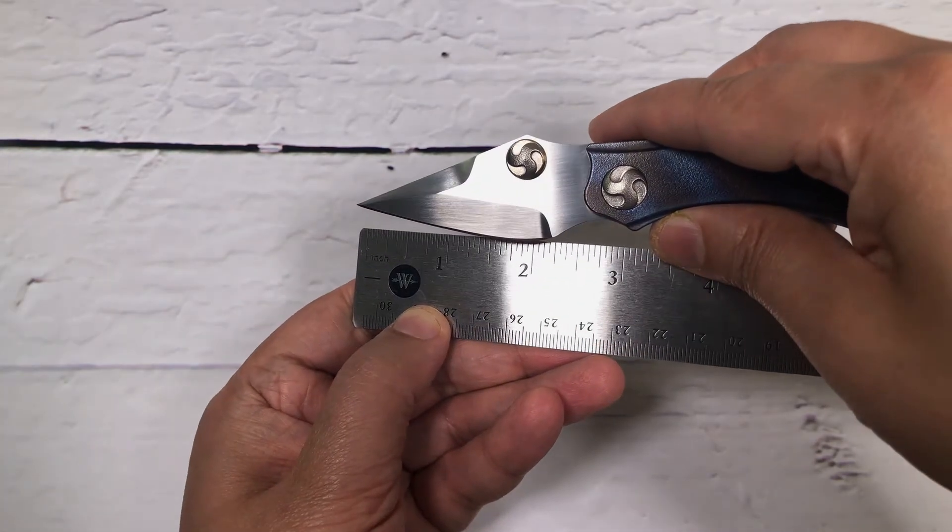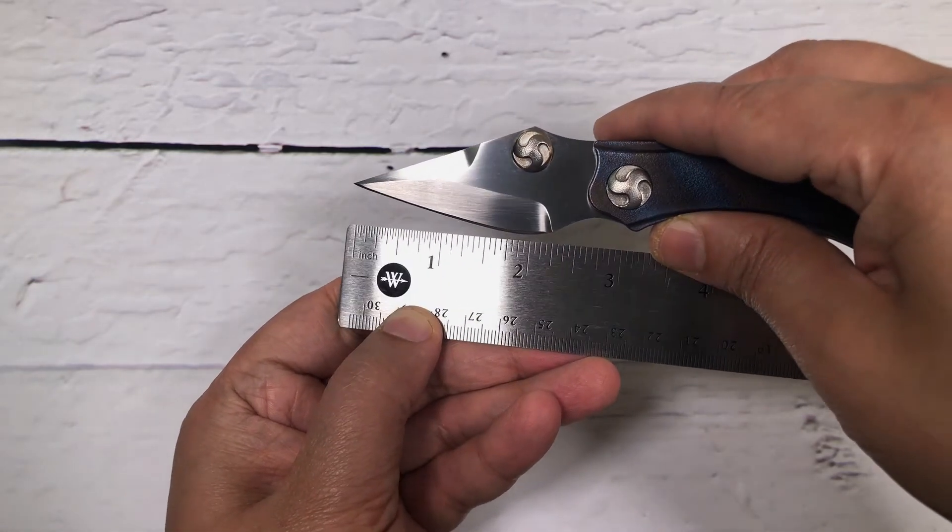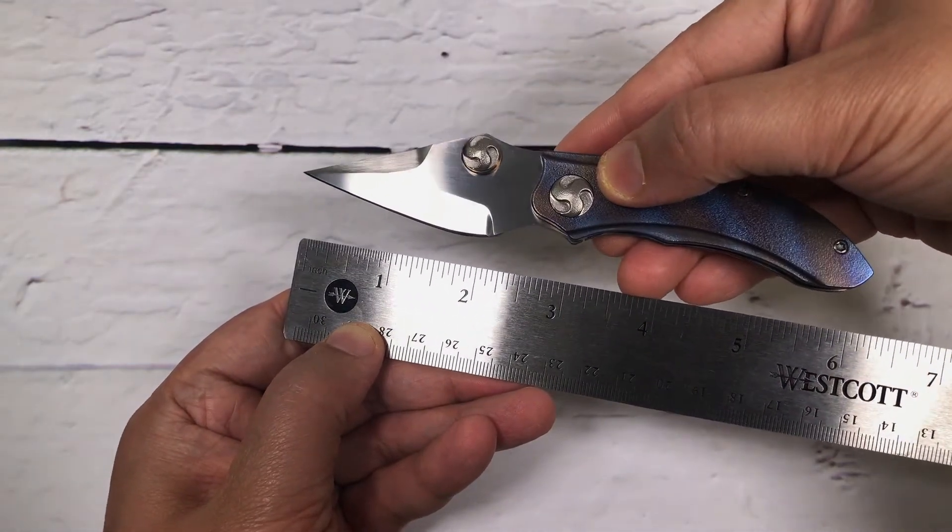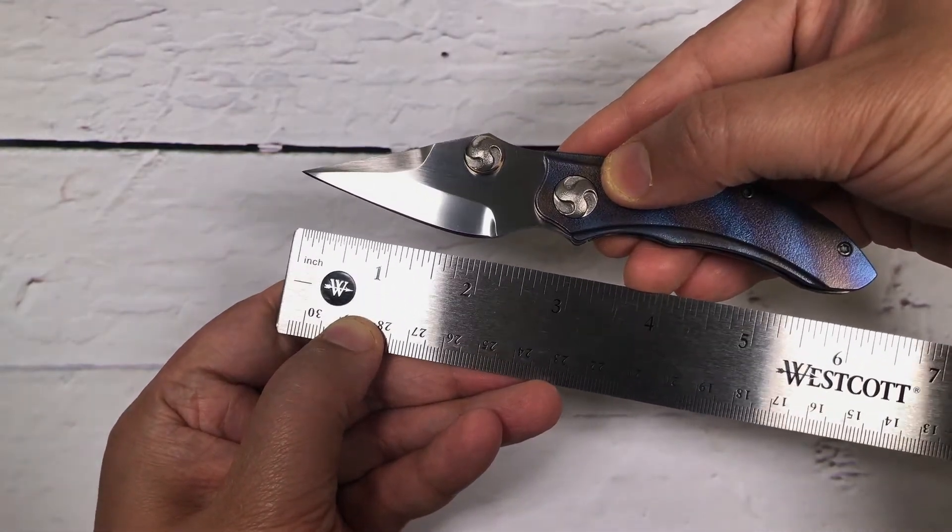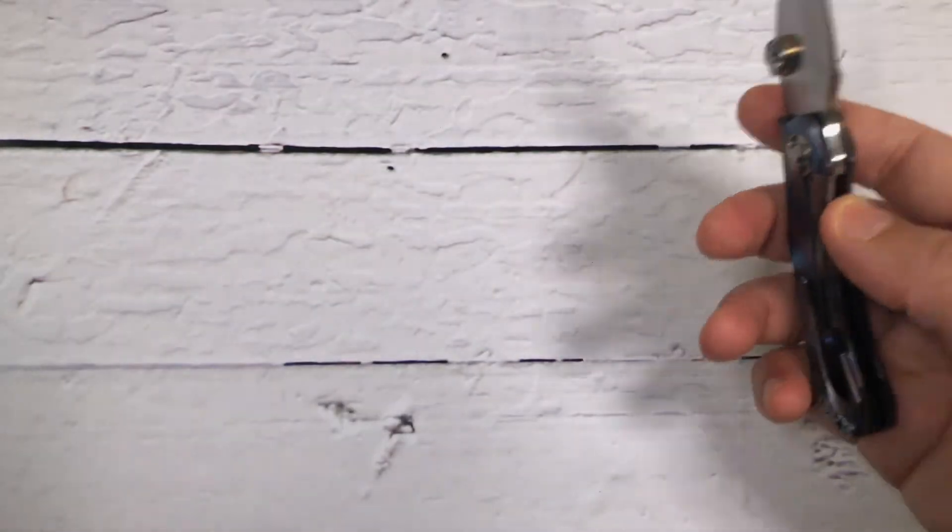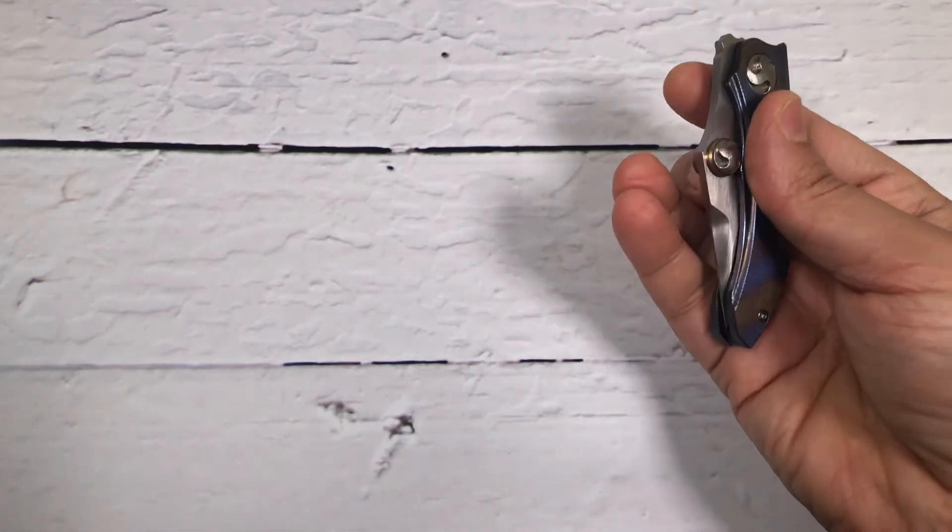2.75, the blade I will say. And the overall length on this one is six inches. So six inch knife, not a bad deal at all. Very beautiful, nice finish.